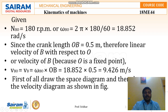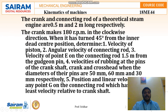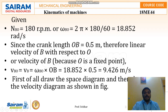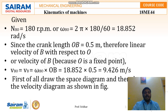Since the crank length OB equals 0.5 meters, the linear velocity of B with respect to O is V_BO = omega_BO × OB = 18.852 × 0.5 = 9.426 meters per second. This is the value of V_BO we will use. Now we need to draw the space diagram and then the velocity diagram to find the different velocities.